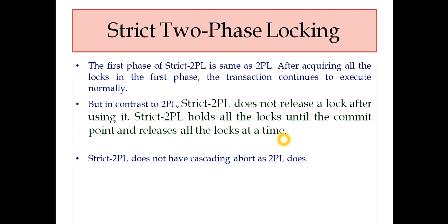So guys, please note down that in case of strict 2PL it is different from 2PL in one sense: strict 2PL does not release a lock after using it. It holds all the locks until the commit point and releases all the locks at a time.